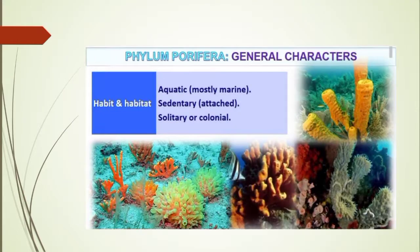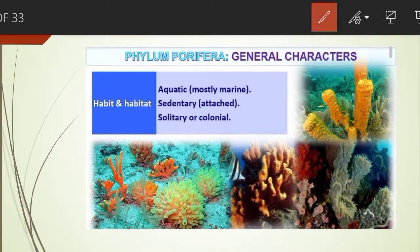Number five is habit and habitat. In terms of habitat, they are mostly aquatic — that is, they are marine, and some are freshwater, found in ponds and lakes. An example is Spongilla. In terms of habit, they are sedentary, meaning they remain attached to the substratum. They are solitary, meaning they live singly, or colonial, meaning they live in groups.